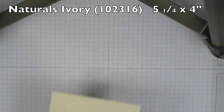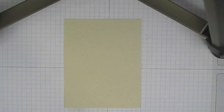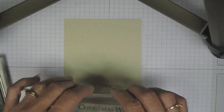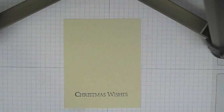I'm starting off with a piece of Naturals Ivory cardstock and the first thing I'm going to do is stamp my sentiment. I'm using the Early Espresso ink for my sentiment. Just put my Christmas wishes down here near the bottom of the card.